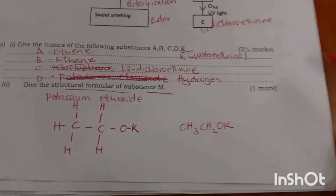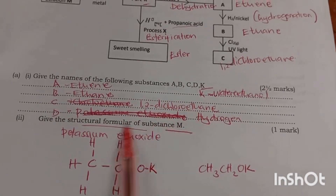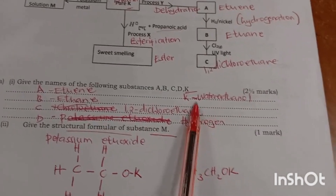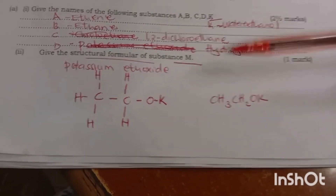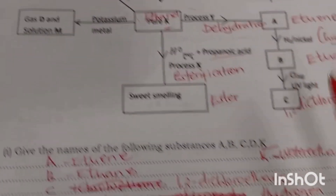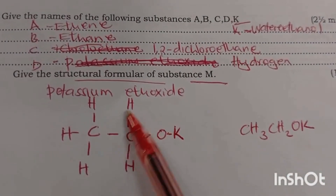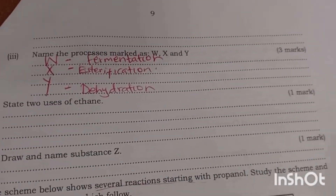Give the names of substances A to D and K: A is ethane, B is ethene, C is 1,2-dichloroethane, D is hydrogen, K is a water and ethanol mixture. Substance M is potassium hydroxide. Process W is fermentation, X is esterification, and Y is dehydration.